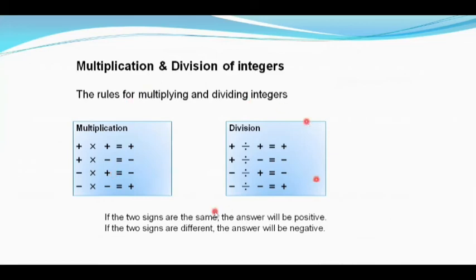Whenever the signs are the same, the answer is positive, and whenever the signs are different, the answer is negative. For multiplication and division the rules are the same: same signs give a positive answer, different signs give a negative answer.